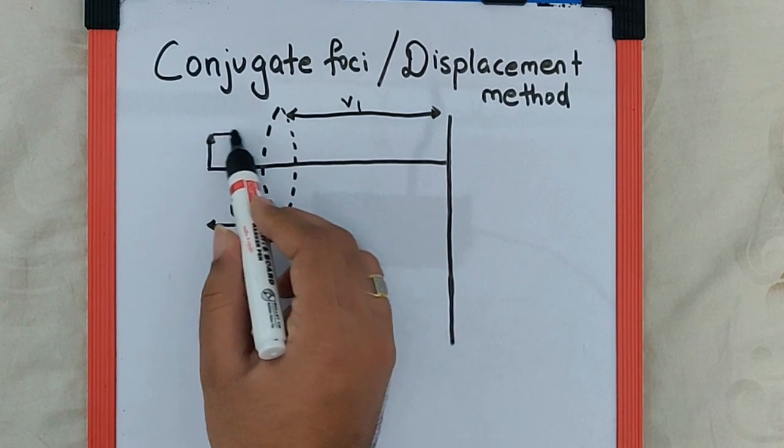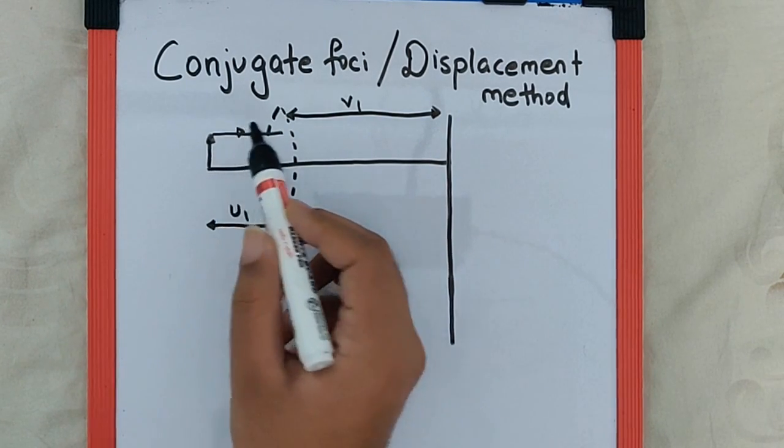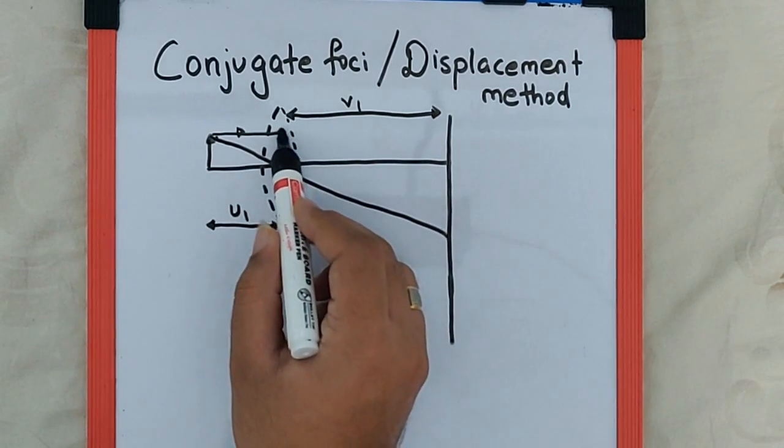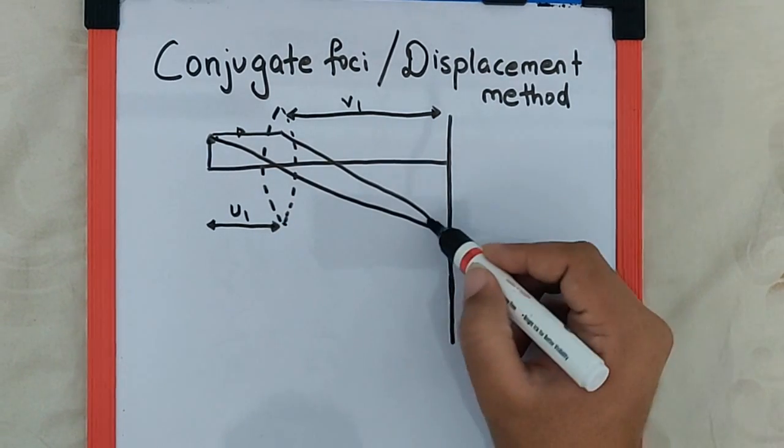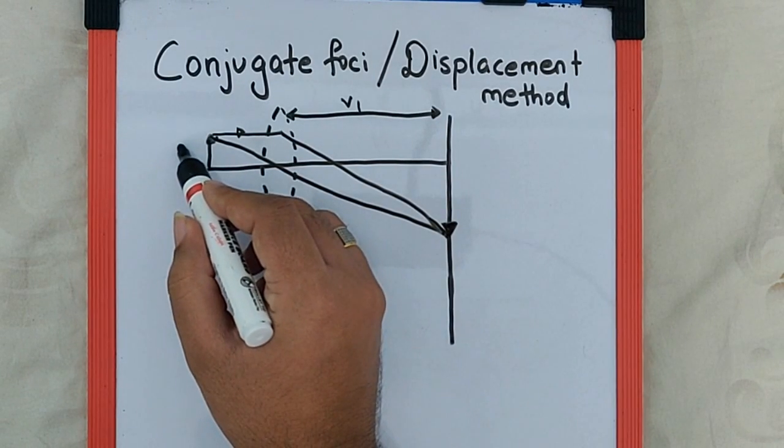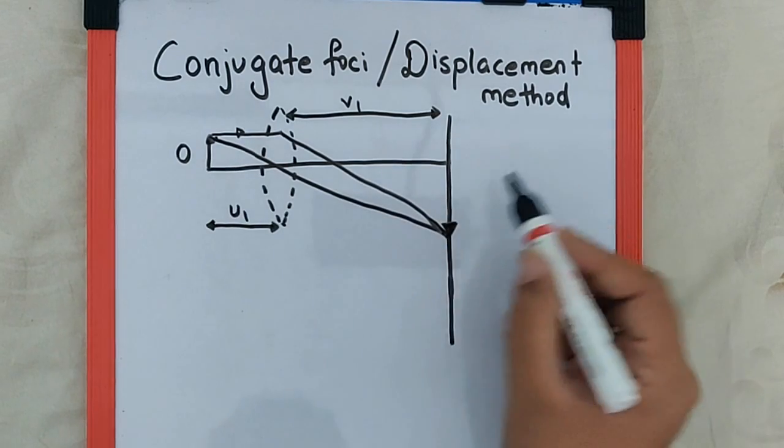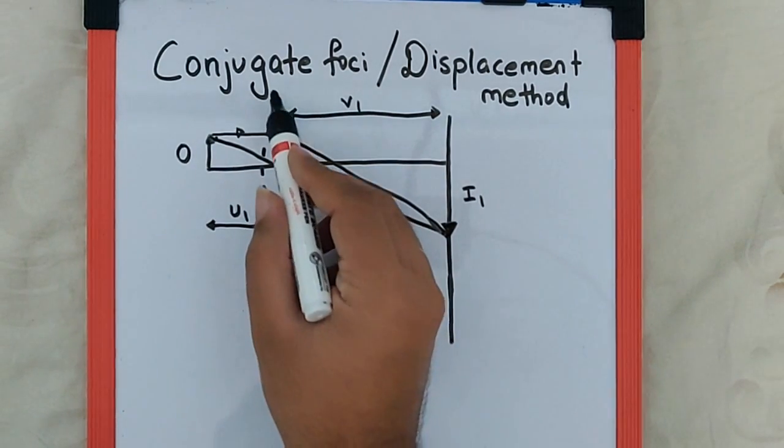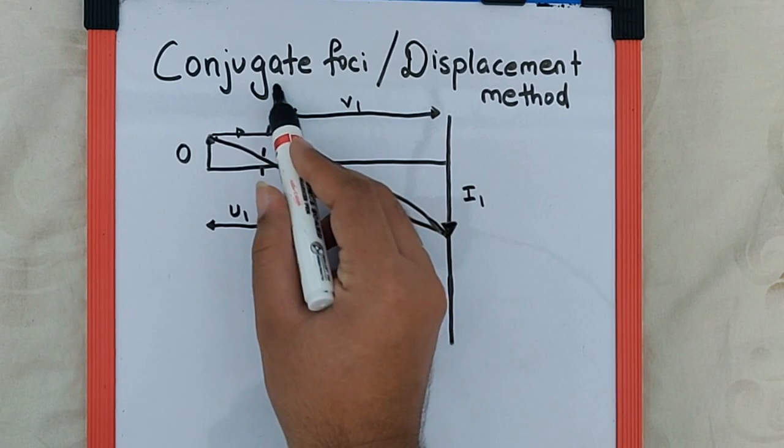the image we get by using the ray diagram is going to be a magnified one. So if this is the height of the object, this is the height of the first image at this position, we can call this position number one.